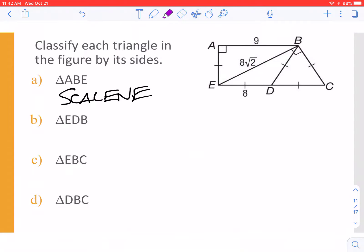Then we come over to E, D, B. What I'll notice is I have two sides that are congruent. So I'm going to call that isosceles. Let's go to E, B, C. What I'm going to notice here is that each side is something different. Once again, we have scalene.